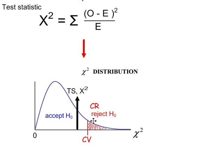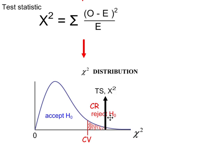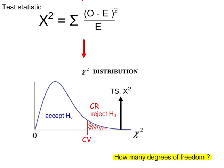We use the chi-squared probability tables for our critical value, and we always work with the right-hand tail of the chi-squared distribution. This is always a one-tailed test, so we're either going to accept H0 or reject H0. The only complicated part of the whole test is how many degrees of freedom should be used.